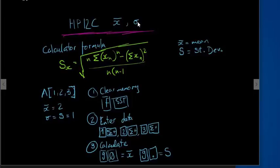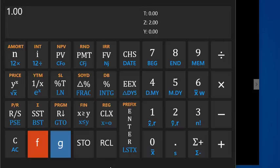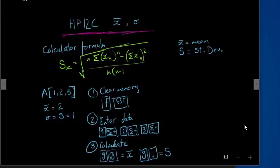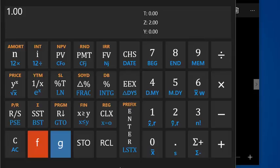So how do we do this in the calculator? Let's have a look at that. First of all, clear the statistical memory. So f sst, f sst statistical.